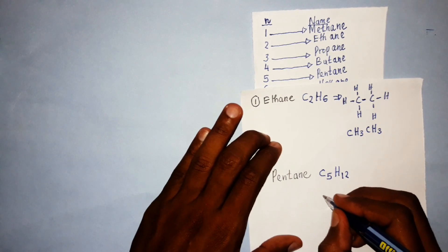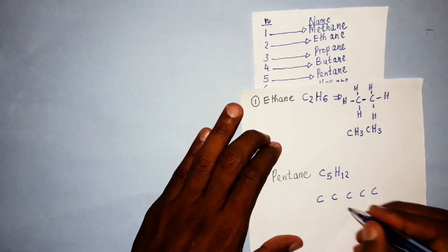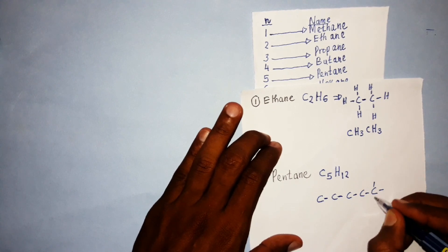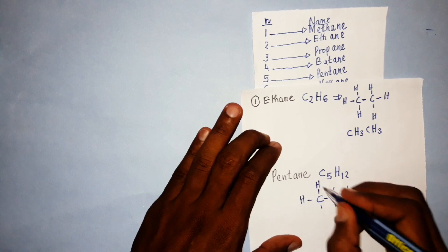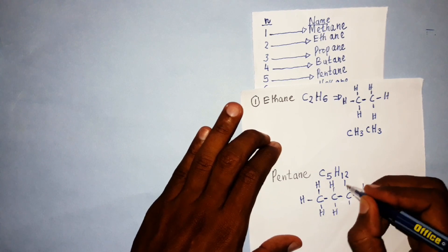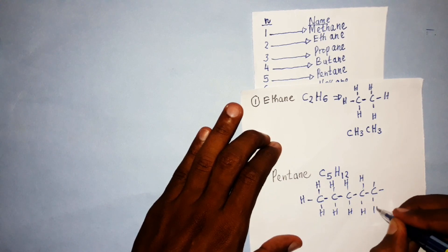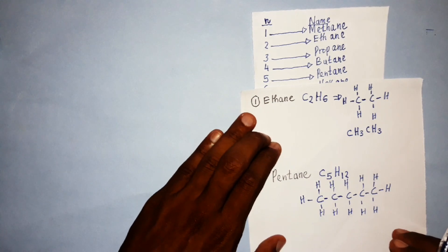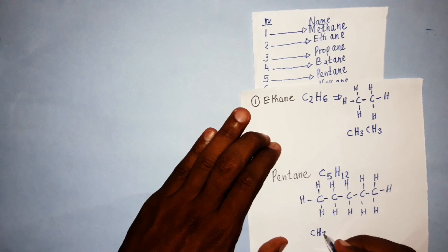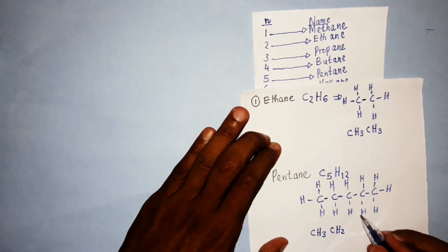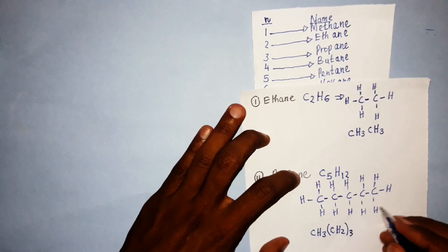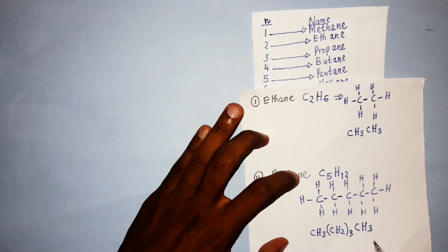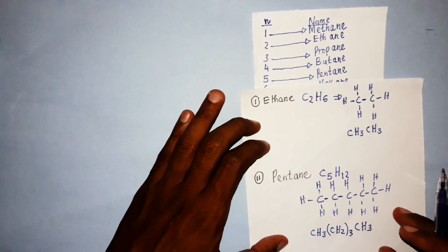To draw the open structural formula of pentane, you draw five carbon atoms joined together. You then distribute the 12 hydrogen atoms around them. For the condensed formula, you identify that CH₂ appears three times in the middle. So the condensed formula is written as CH₃(CH₂)₃CH₃. That is how the nomenclature of alkanes is done.